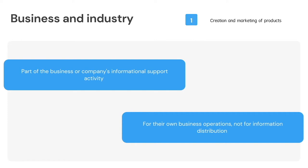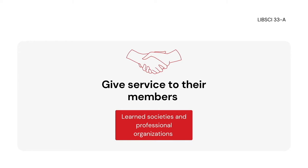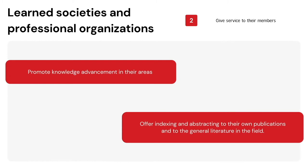The second are the learned societies and professional organizations. The goal of learned societies and professional organizations is to give service to their members and to promote knowledge advancement in their areas. These societies and organizations often issue a substantial number of primary publications, and many also offer indexing and abstracting services, both to their own publications and to the general literature in the field.